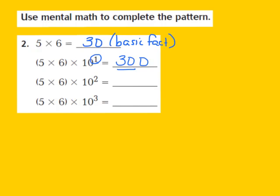For the next part in my pattern, they once again give me 5 times 6, this time times the second power of 10. My exponent is 2, so I'm going to start out by writing down the product of my basic fact, which was 30, and add two 0s. My product here turns out to be 3,000.